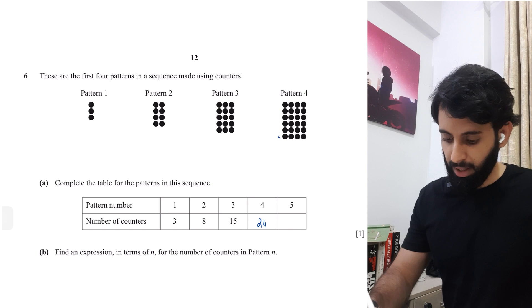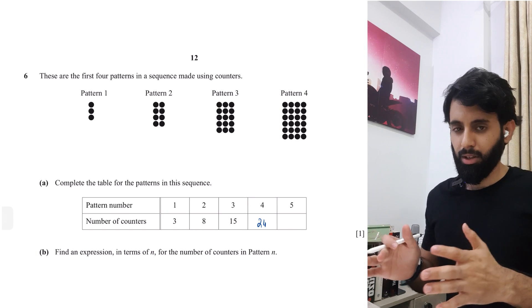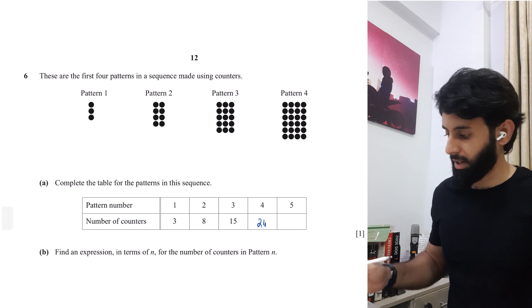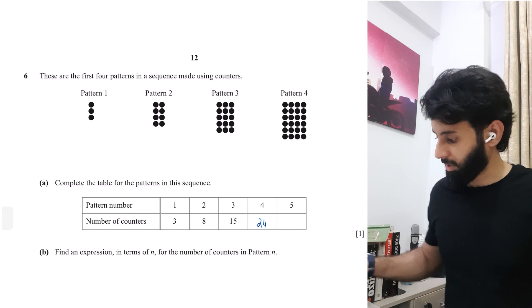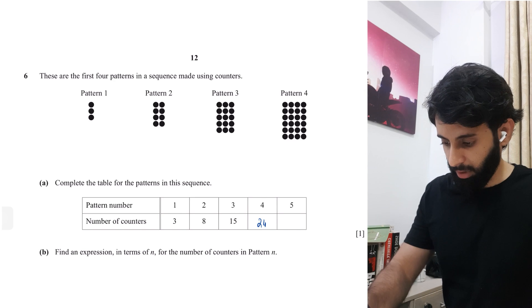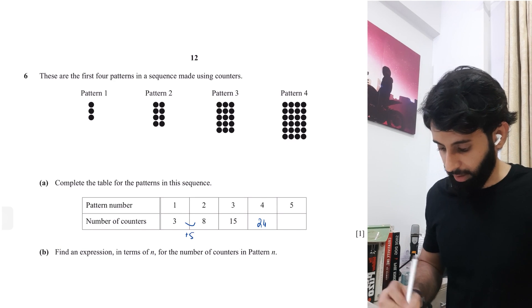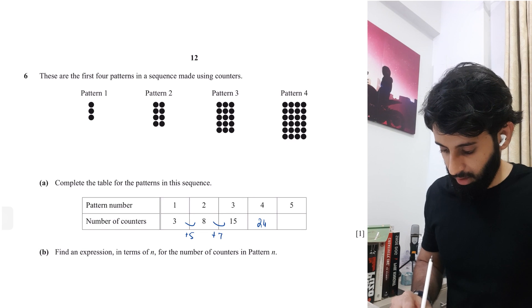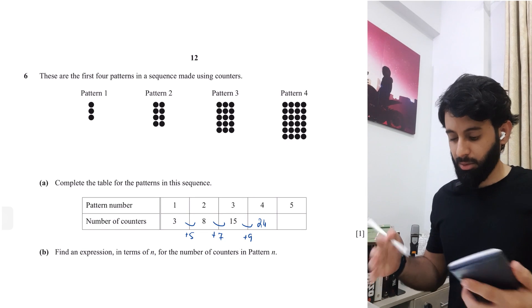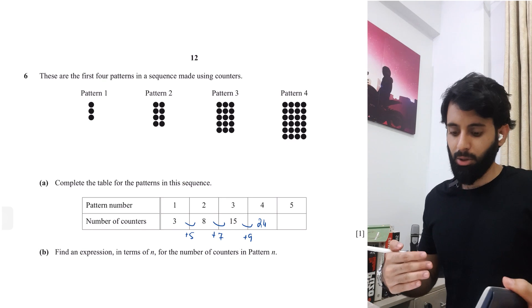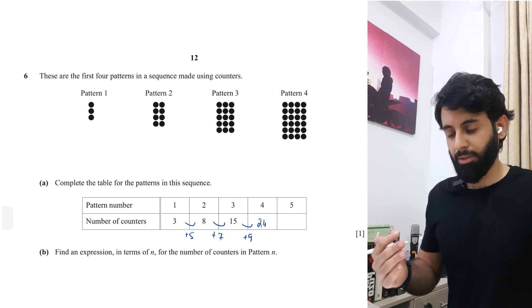Now let's examine the pattern and see if we can come up with a trend and using that trend, we'll find the number of counters in the fifth pattern number. Okay. So here we have three, three to eight, we can go by adding five, eight to 15. We can go by adding seven, 15 to 24. We'll have to add nine. So you should have picked up a pattern here. The pattern is that the term that you're always adding in order to get to the next number of counters is always two greater than the previous number that you added.